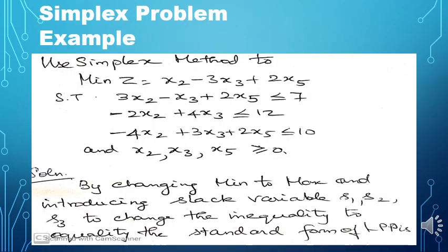Now we see an example in the Simplex problem. Use the Simplex method to minimize L = x2 - 3x3 + 2x5, subject to: 3x2 - x3 + 2x5 ≤ 7; -2x2 + 4x3 ≤ 12; and -4x2 + 3x3 + 2x5 ≤ 10; and x2, x3, x5 ≥ 0.